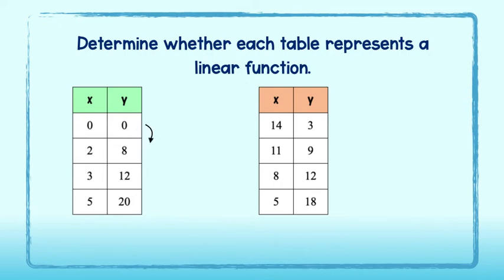From 0 to 8, I add 8. And from 0 to 2, I add 2, giving me a rate of change of 8 over 2, or 4.